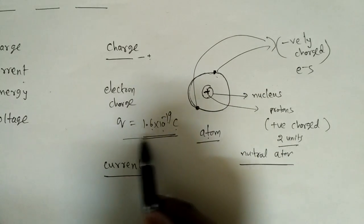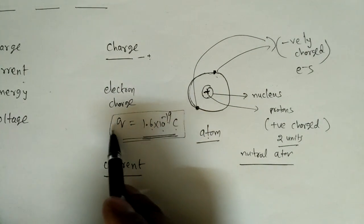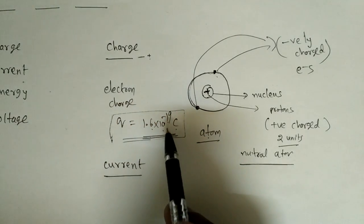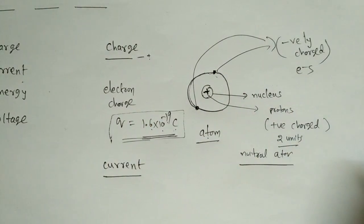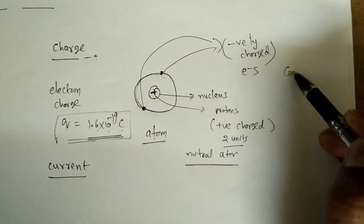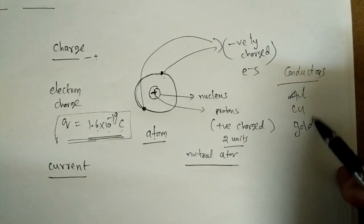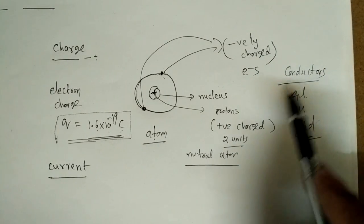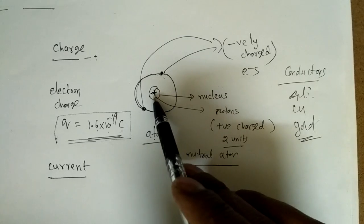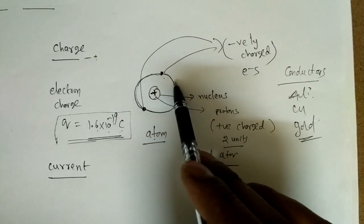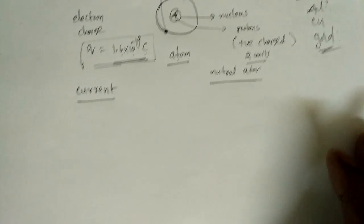Since the electron is negatively charged, we represent it as −q, or −1.6 × 10⁻¹⁹ coulombs. For a positively charged particle it becomes +1.6 × 10⁻¹⁹ coulombs. In conductor materials such as aluminum, copper, or gold, there are a large number of atoms, and each atom has positive charges at the nucleus and negatively charged electrons in the outer orbits, depending on its atomic number.